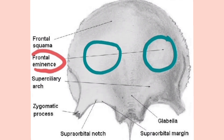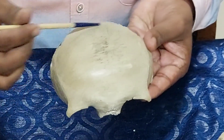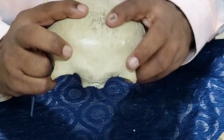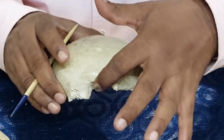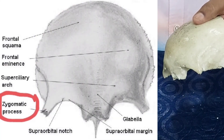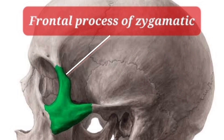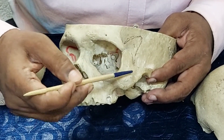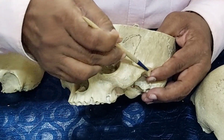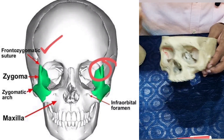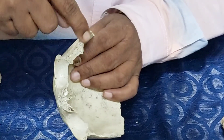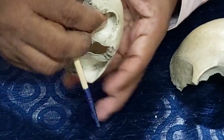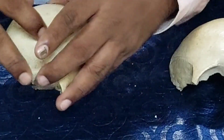Ossification starts from the frontal eminence. On the external surface you will find the frontal belly of the occipitofrontalis and the epicranial aponeurosis. Laterally, there is a process called the zygomatic process of the frontal bone, which articulates with the frontal process of the zygomatic bone — forming the frontozygomatic suture. Laterally, this process ends in a rough triangular area that articulates with the greater wing of the sphenoid.